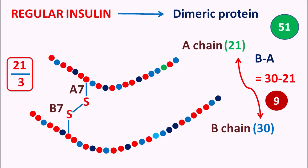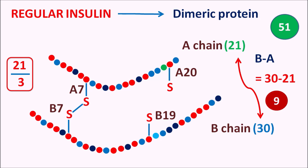Another disulfide bridge is present at the 20th position of the A chain and the 19th position of the B chain. This can be remembered as follows: the A chain has 21 amino acids; subtract one to get position A20, then subtract one more to get B19. So another disulfide bridge connects A20 and B19.